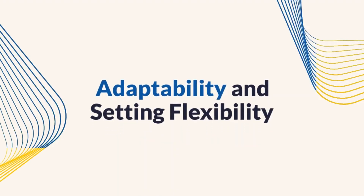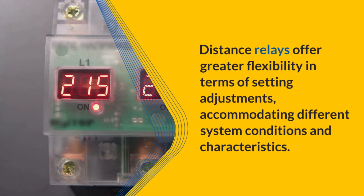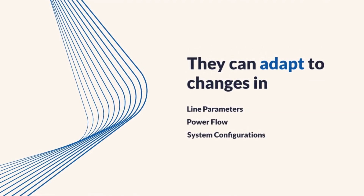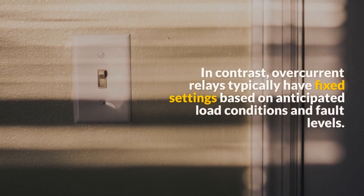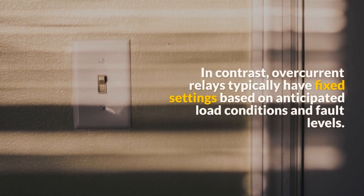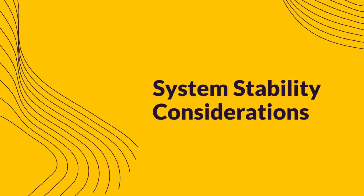Four: adaptability and setting flexibility. Distance relays offer greater flexibility in terms of setting adjustments and can accommodate different system conditions and characteristics. They can be set to adapt to changes in line parameters, power flow, and system configurations. Overcurrent relays, on the other hand, typically have fixed settings based on anticipated load conditions and fault levels.